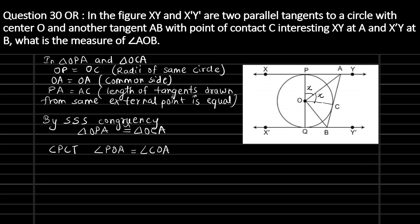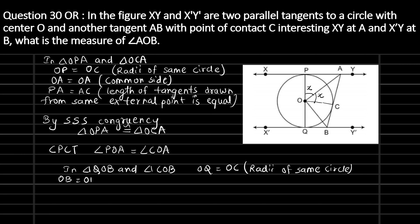Now look at triangle QOB and triangle COB. In triangle QOB and triangle COB, OQ is equal to OC as they are radii of the same circle. And BQ is equal to BC as they are lengths of the tangent drawn from the same external point B.